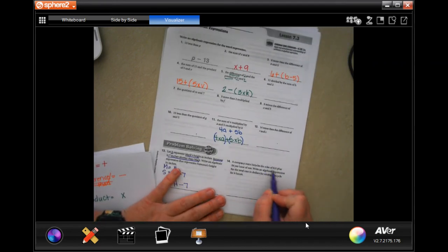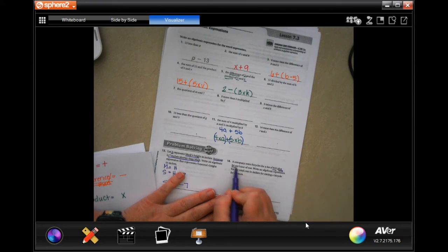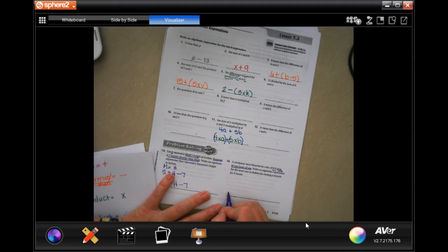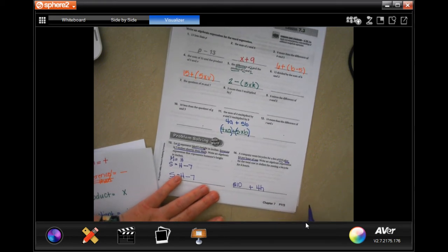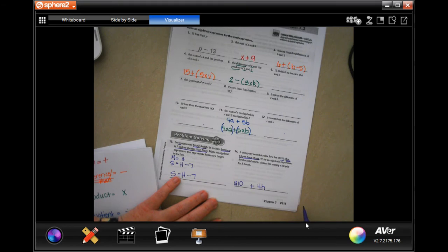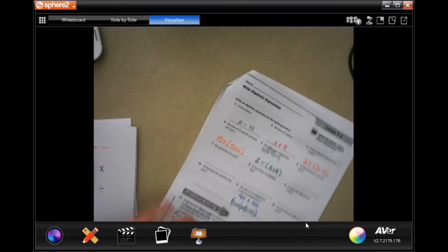The company rents bicycles for a fee of $10 plus $4 an hour. So $10 plus four times however many hours. Write an algebraic expression. That's it guys. We're going to go on to the back.